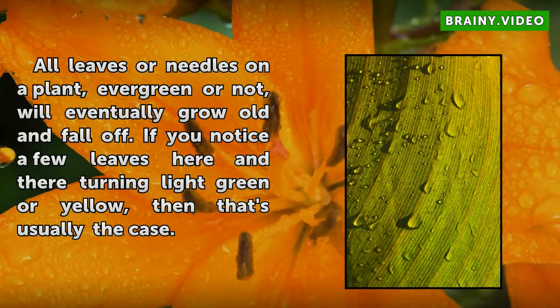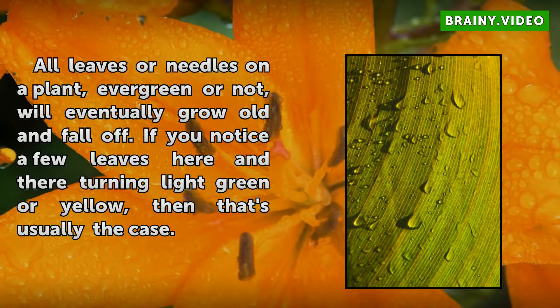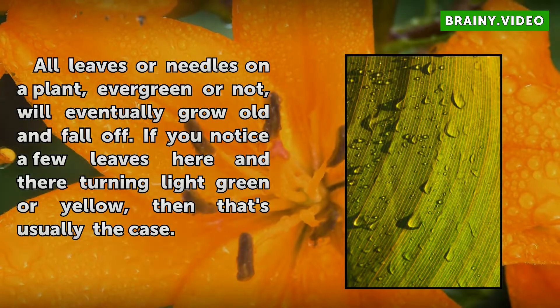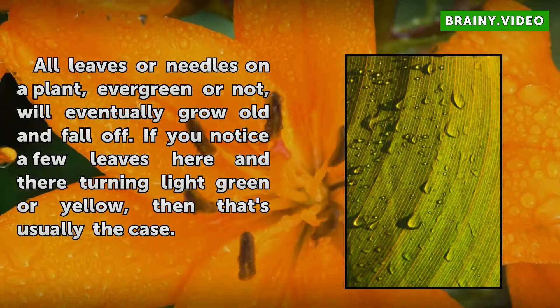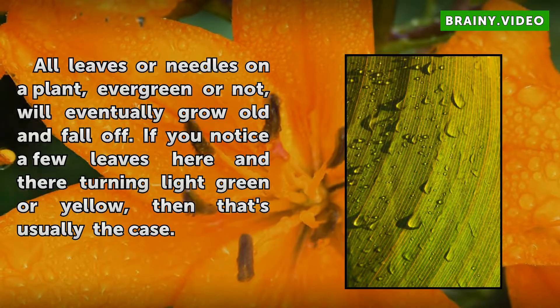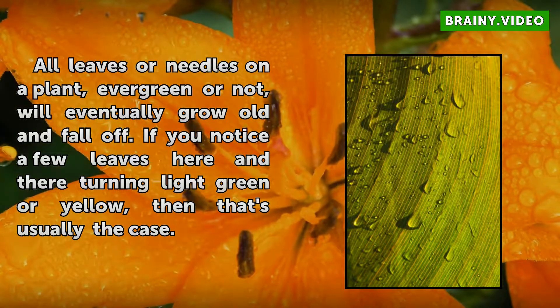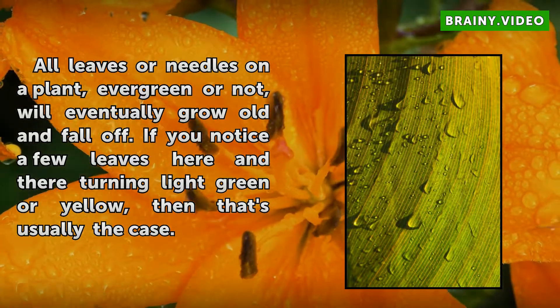Age: All leaves or needles on a plant, evergreen or not, will eventually grow old and fall off. If you notice a few leaves here and there turning light green or yellow, then that's usually the case.